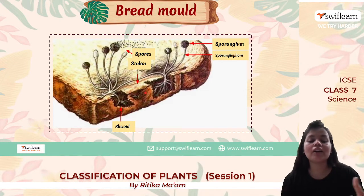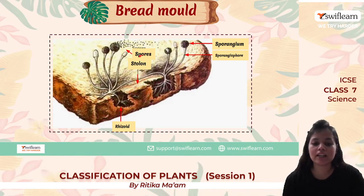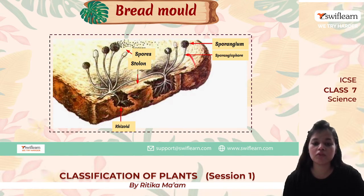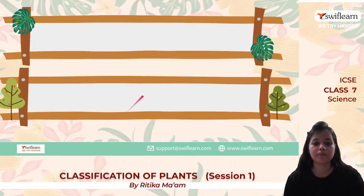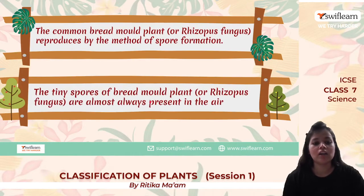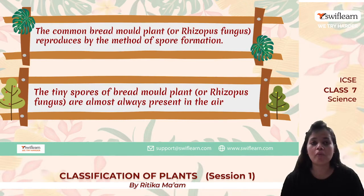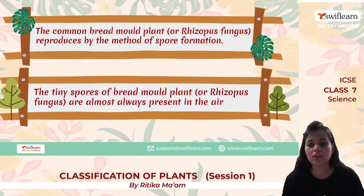Looking at fungi growing on bread mold, it has specific parts: this part is known as the stolon, this part is known as the rhizoid, then we have the sporangium, and here we have the sporangiophore. These are some of the parts of the bread mold structure, and from these spores the fungi reproduce. The common bread mold, also known as Rhizopus fungus, reproduces by the method of spore formation.